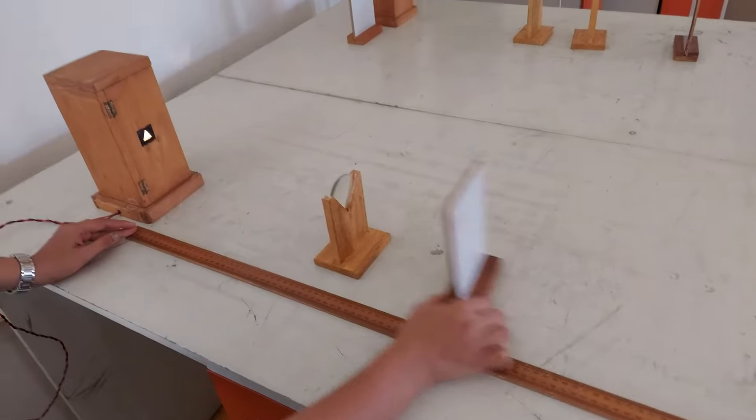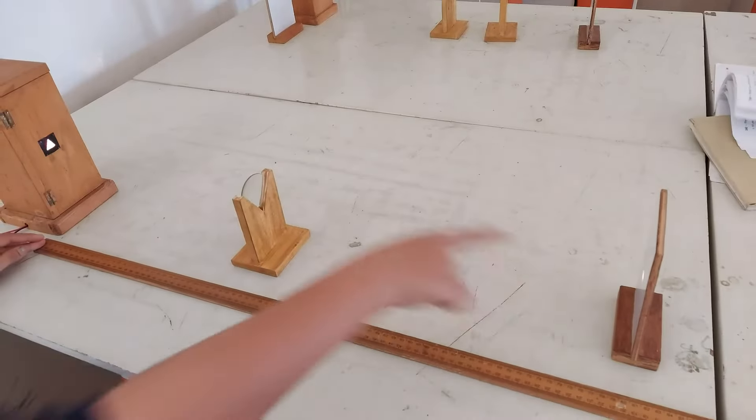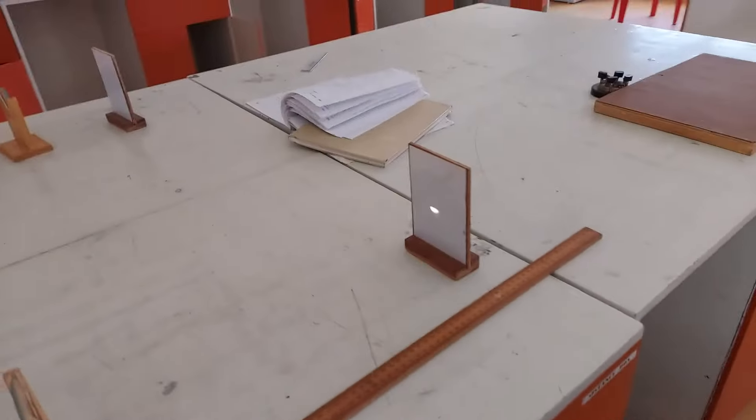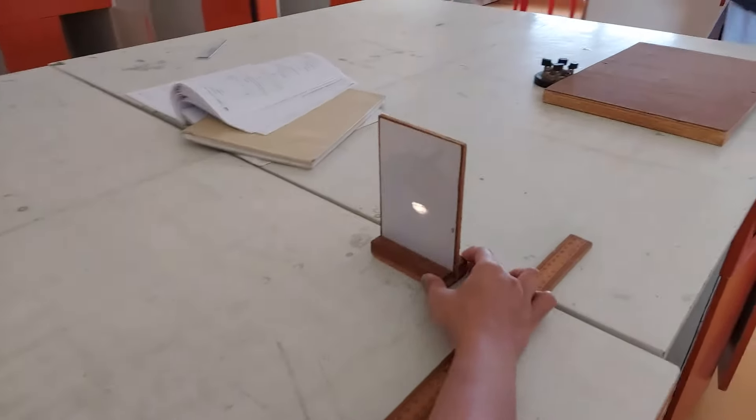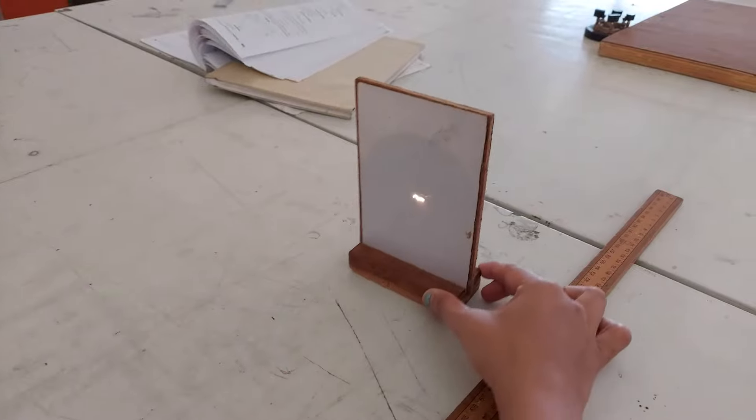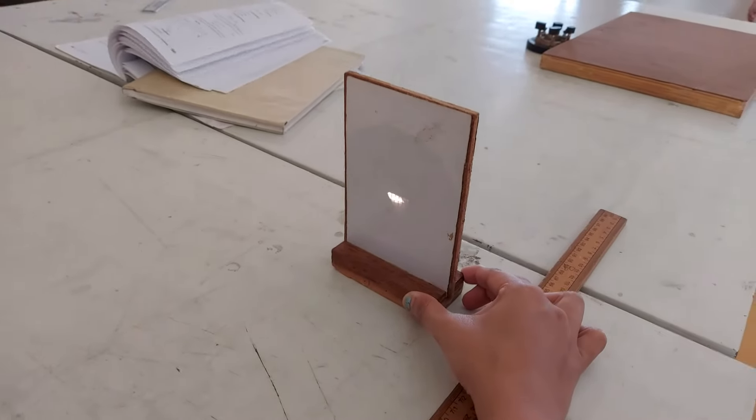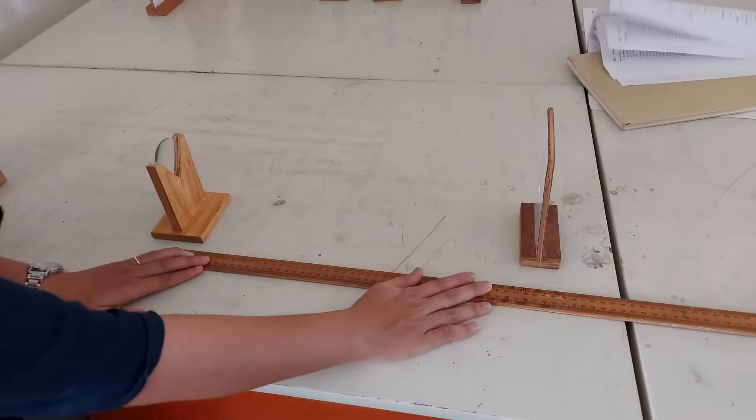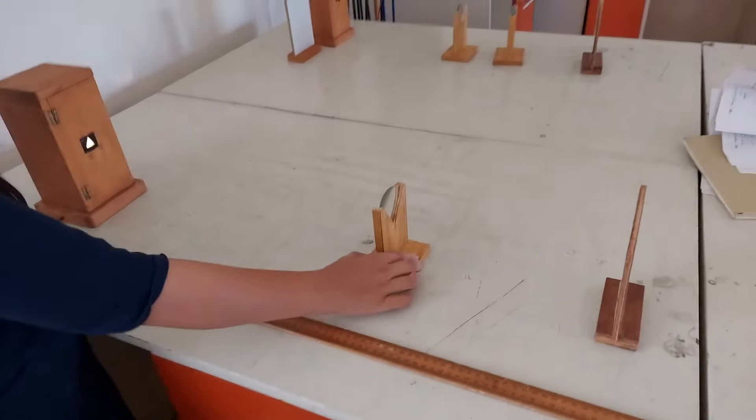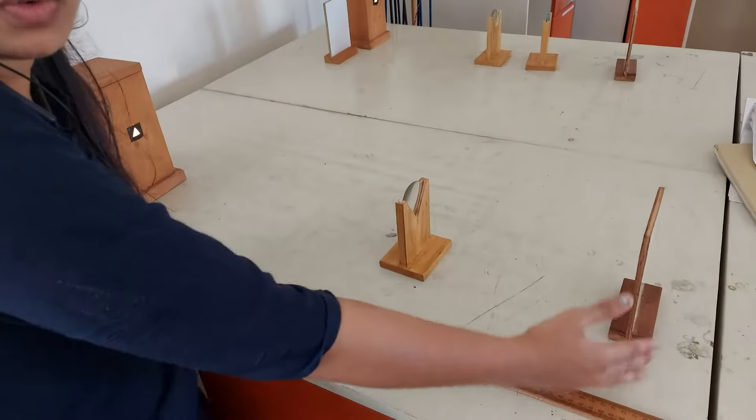There you will be getting a proper image. Measure the distance between the lens and the screen. This distance will be your v. Like this, measure different values of u and corresponding different values of v.